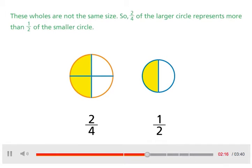These wholes are not the same size. So, two-fourths of the larger circle represents more than one-half of the smaller circle. They are the same fractions of their wholes, but the amounts are different.